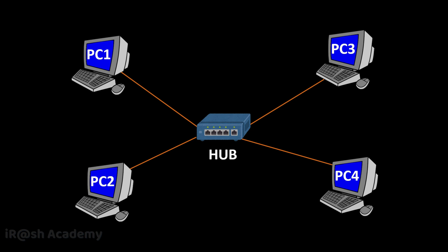One major disadvantage of a network hub is that it has only one collision domain. This means if multiple devices are connected to a network hub, only one device can send or receive data at a time. PC1 can either send or receive, but not both simultaneously. When multiple devices try to send at the same time — for example, PC1 sends to PC4 and PC2 tries to send to PC3 — both data packets collide because the hub has only a single collision domain.